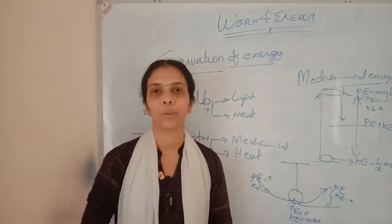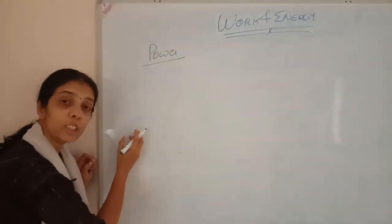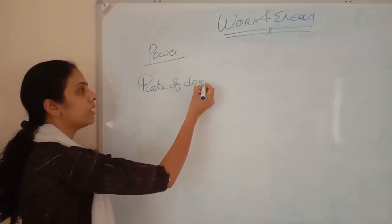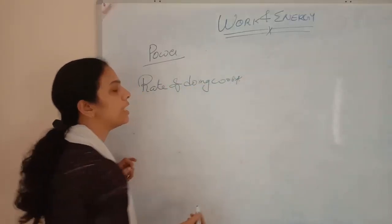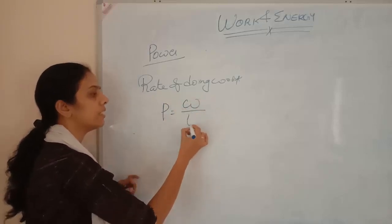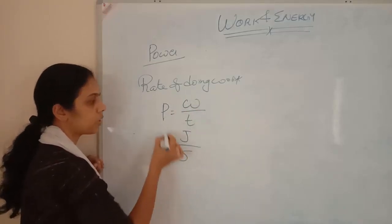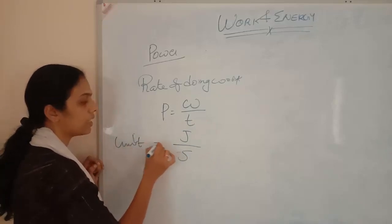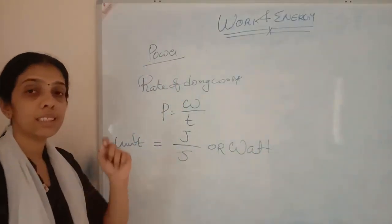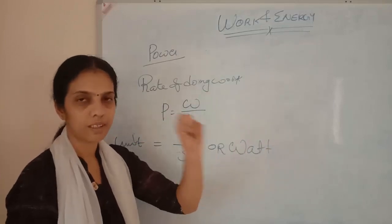Next we are going to study about power. Power is the rate of doing work — that is called power. Rate means with respect to time. So power equals work done divided by time. The SI unit of work done is joule and time is second, so the SI unit of power is joule per second, or we can write it as watt. Watt is the unit of power.